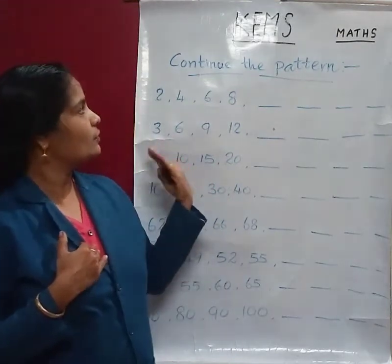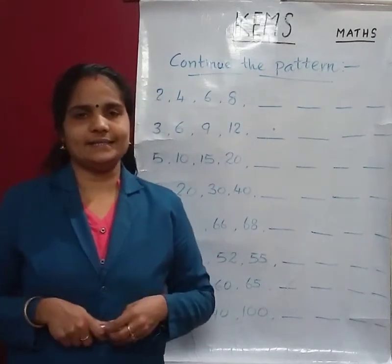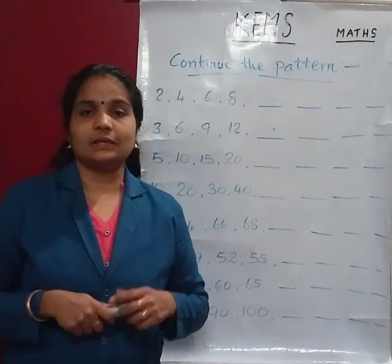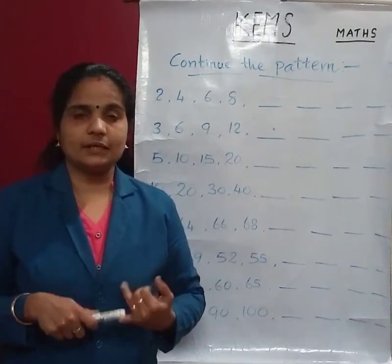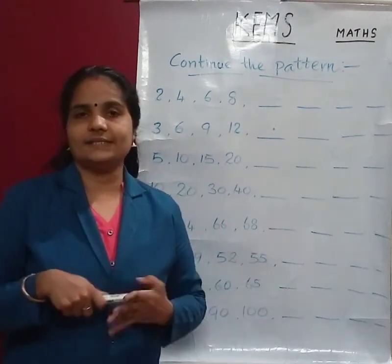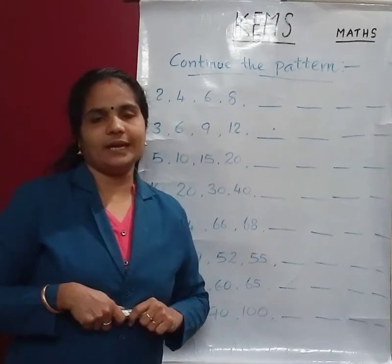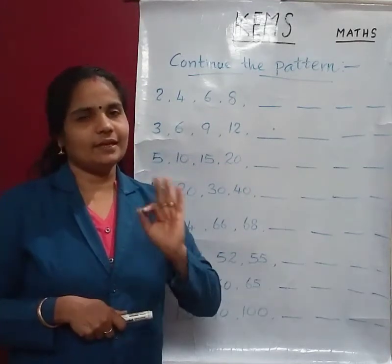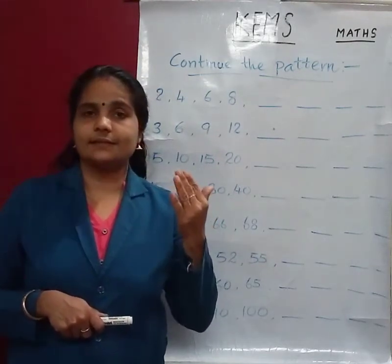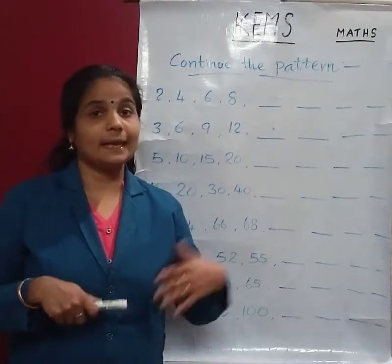Now we are going to learn some number patterns. It is very easy. Patterns means counting some numbers — counting in twos, counting by tens, counting by fives, counting by threes. That is the difference of those numbers, okay — add the difference. Children, you know the numbers, counting by fives or counting by tens — skip counting.